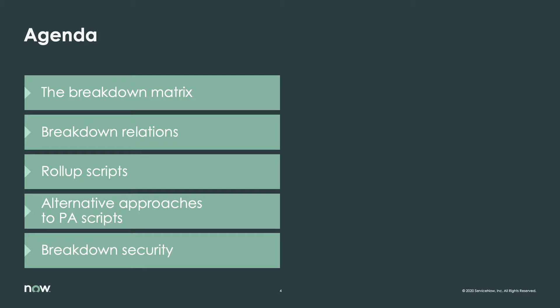We'll take a look at the ability to use scripting and roll-up scripts to leverage hierarchical structures in your dashboards. And then we'll look at alternative approaches, because scripting is considered a last resort when it comes to performance analytics. Finally, we will wrap up with the lab on breakdown security — how you can create security around the various breakdowns so different users only see the breakdown options relevant to them, like only the groups they belong to.